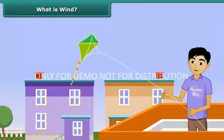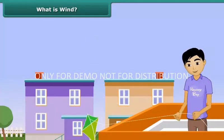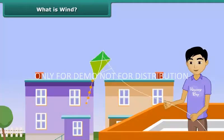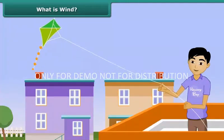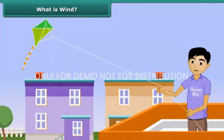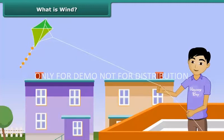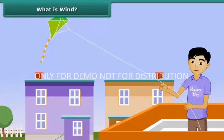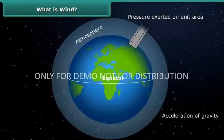What is wind? Ankit is trying to fly a kite but the kite is not flying. What does he need to do? It is very simple — he should fly the kite in the direction of moving air. Moving air helps the kite to climb in the sky. We call this moving air as wind. Now the question comes: what causes air to move?